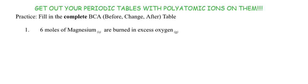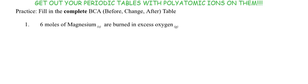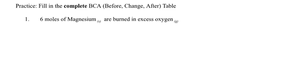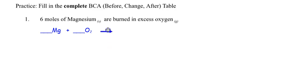All right, so what do we have here? We have six moles of magnesium burned in excess oxygen. So you don't start by putting a six in the equation — you're going to balance it first. The six will go in the B column. What kind of reaction is this? Go back to your Chapter 8 files.